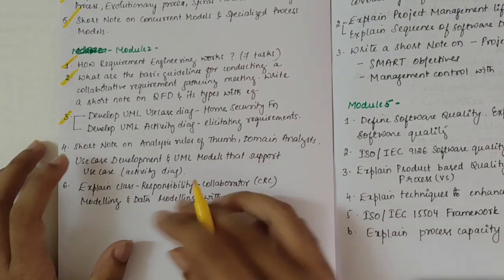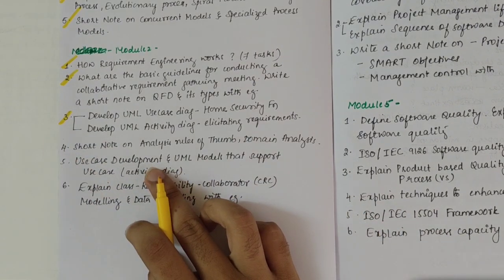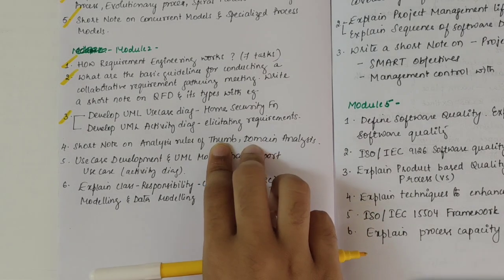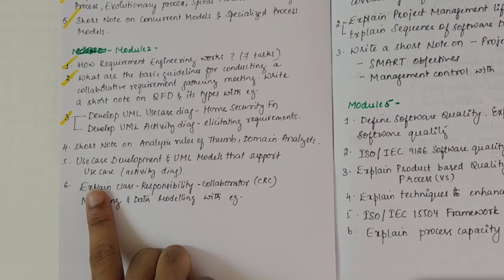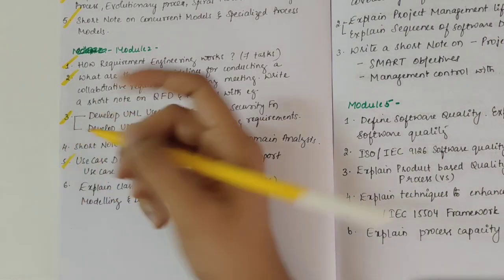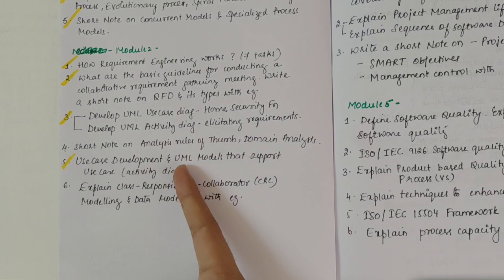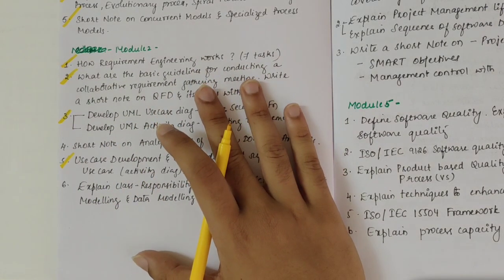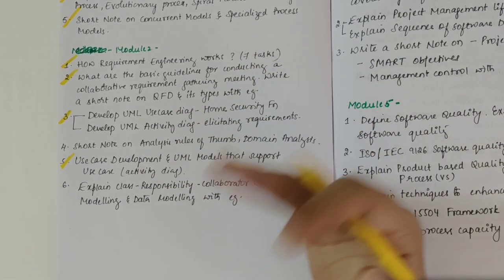Then moving on to fourth: short note on analysis of rule of thumb and domain analysis. This could be asked for 3 marks or 4 marks. Then we have use case development and UML model that supports use case - the activity diagram in the second chapter. This is again important.